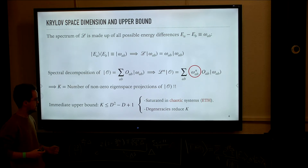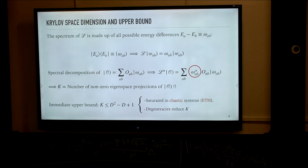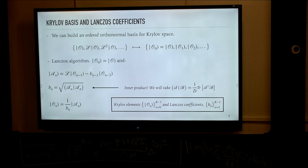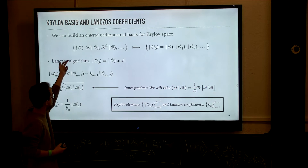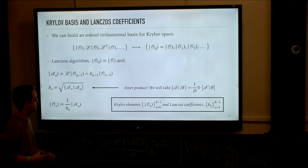We can anticipate that degeneracies in the spectrum of the Hamiltonian or the Liouvillian will actually reduce the size of the Krylov space. But now we need to define some notion of complexity on that space, and for this we are going to study dynamics in that space. The first ingredient we require is some orthonormal basis in Krylov space with respect to which we can measure time evolution.